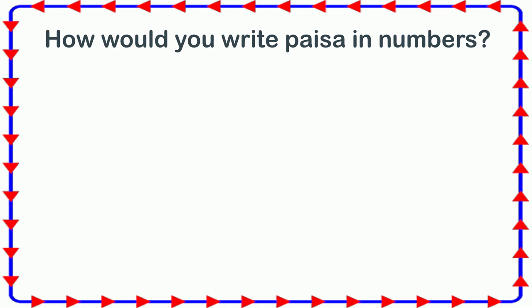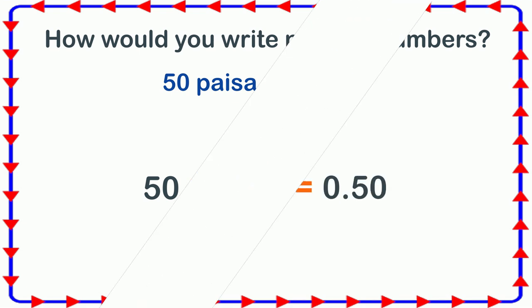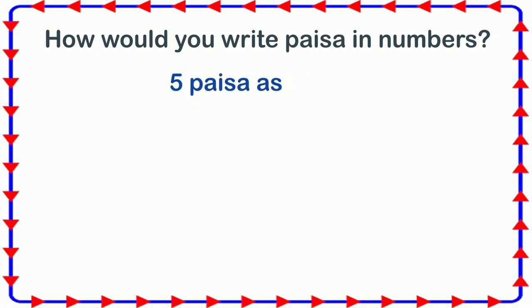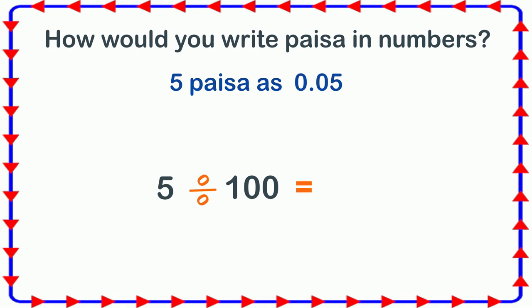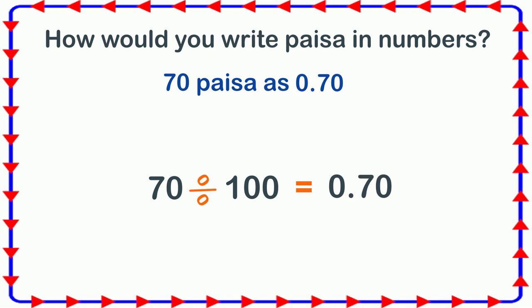Since paisa is smaller than rupee and we write money in rupees, we will write fifty paisa as 0.50, because fifty divided by hundred is equal to 0.50. Five paisa as 0.05, because five divided by hundred is equal to 0.05. Seventy paisa as 0.70, because seventy divided by hundred is equal to 0.70.